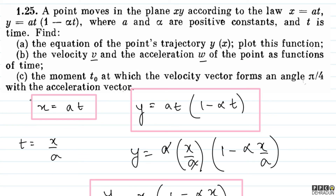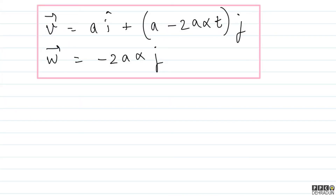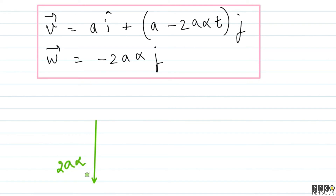Now for part C: find the moment t₀ at which the velocity vector forms an angle π/4 with the acceleration vector. Let me show you an interesting approach to solving this.